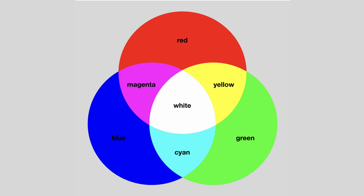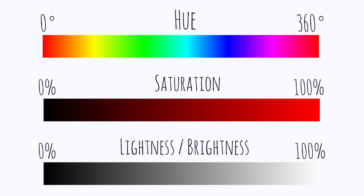First I want to talk about what makes up color. Obviously RGB lighting is red, green, and blue, and everything is made up of those three colors, a mixture of all three. And most of the time on RGB lights, the way that we are adjusting the color is called HSL. That stands for hue, saturation, and luminance.